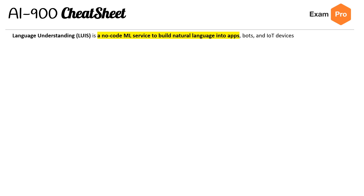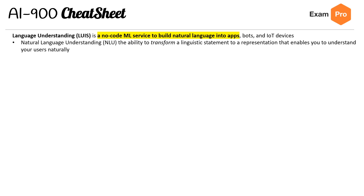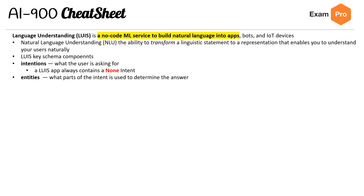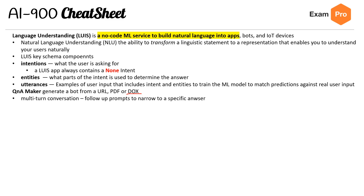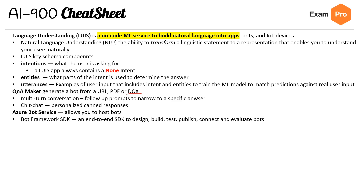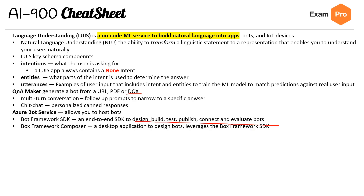LUIS — Language Understanding — is a no-code ML service to build natural language understanding into apps, bots, and IoT devices. It uses NLU, the ability to transform a linguistic statement into a representation that enables you to understand users naturally. LUIS key schema components: Intents — what the user is asking for (a LUIS app also contains a None intent); Entities — what parts of the intent are used to determine the answer; Utterances — examples of user input that include intent and entities, used to train the ML model to match predictions against real user input. For Q&A Maker: generate a bot from a URL, PDF, or DOCX file. It supports multi-turn conversation with follow-up prompts to narrow a specific answer, and chit-chat for personalized canned responses. Azure Bot Service allows you to host bots.